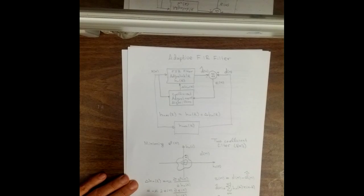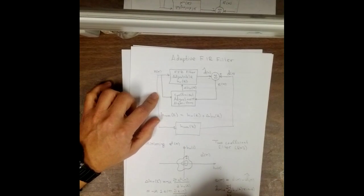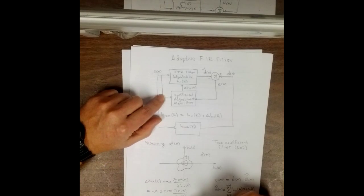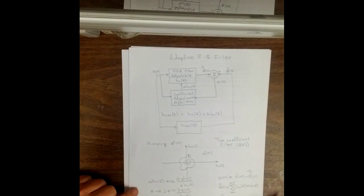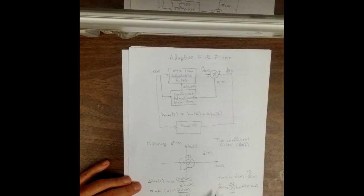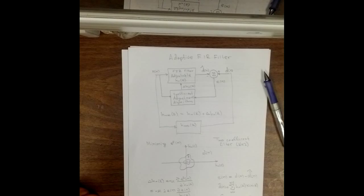So we can then write this delta h sub n of k like this. It's minus mu times 2 times e of n times x of n minus k. And if you look up here at our coefficient adjustment, we get e of n, so we can just plug that in right there. And we get x of n here, so we can just plug in x of n minus k and get all these delta h sub n of k. You can get all the changes here, and then we can get the new coefficients for the next iteration. So that, my friends, is how an adaptive FIR filter works, a very simple one.